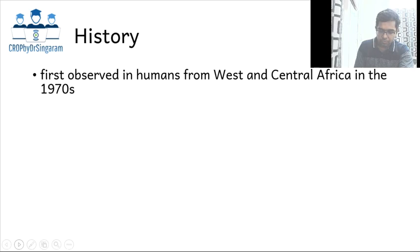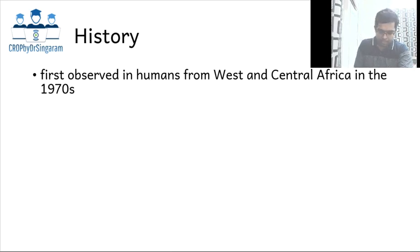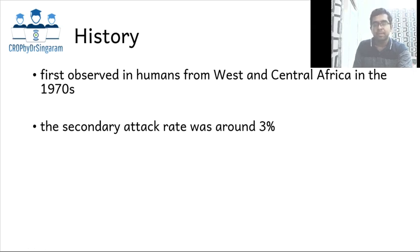This disease was first observed in humans from West and Central Africa in the 1970s. It was roughly the time at which smallpox was eradicated. The secondary attack rate of this disease is around 3%, and even in the ongoing cases, the secondary attack rate remains low.